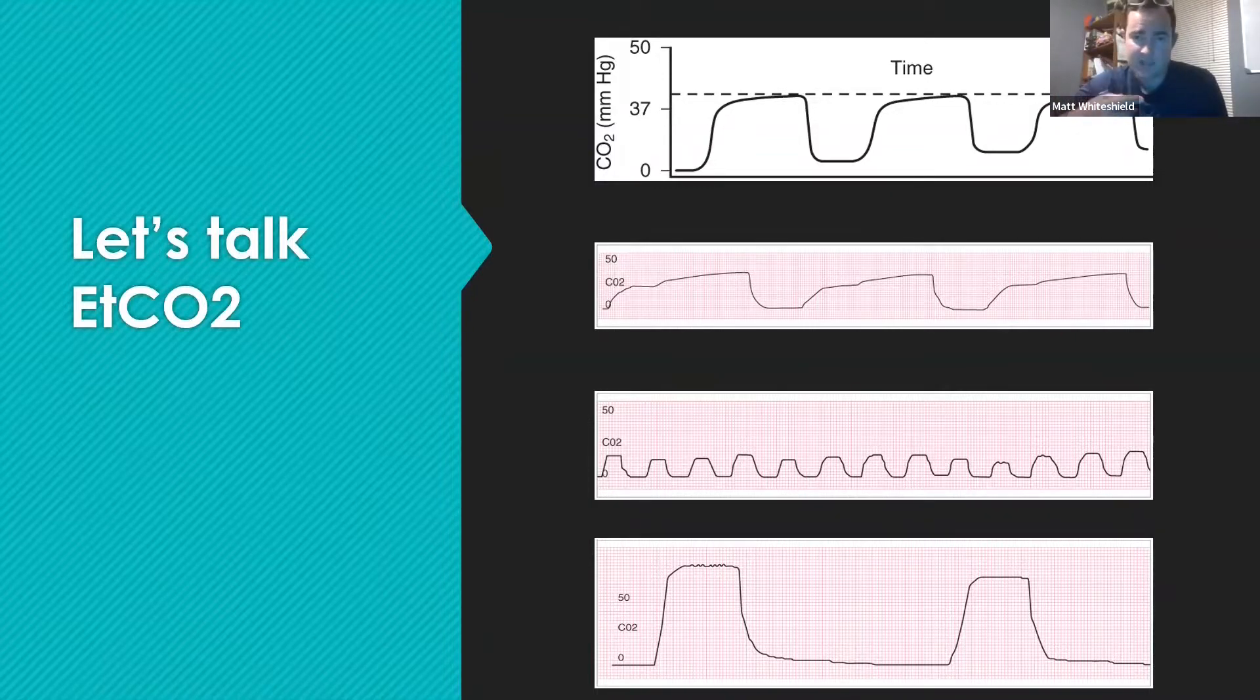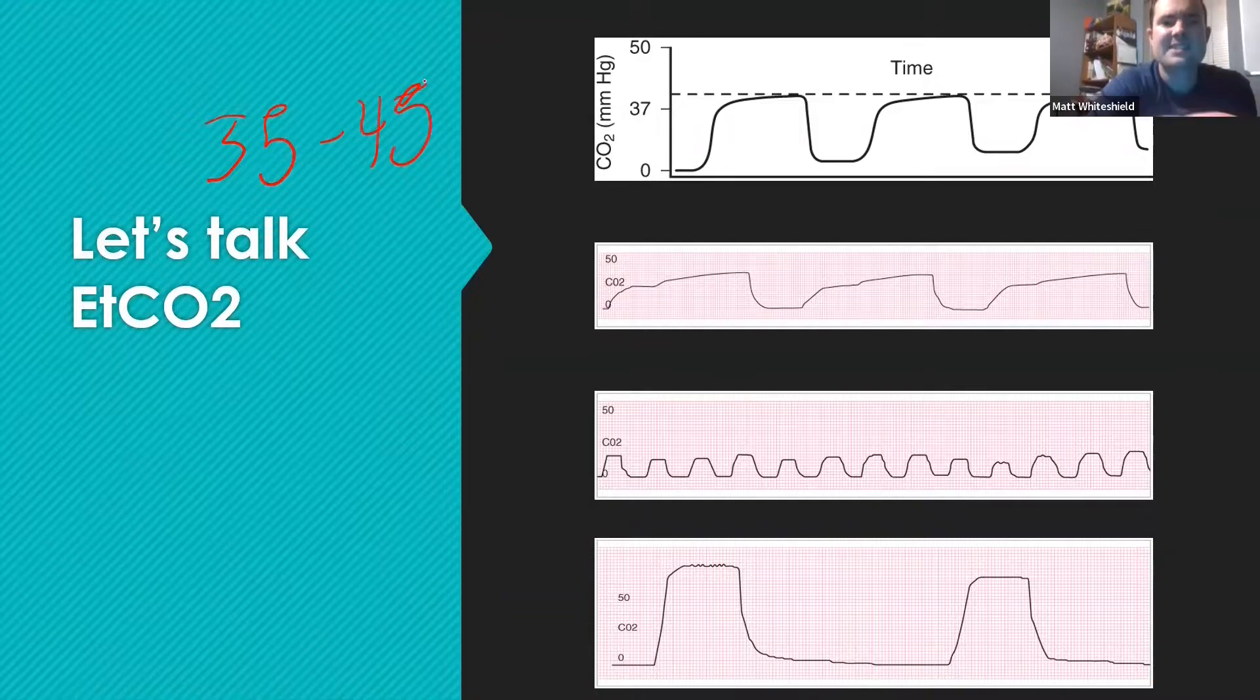It looks like a nasal cannula with a little thing sticking out of the bottom probe, and it reads capnography levels. We know normal capnography is 35 to 45, that's considered normal.